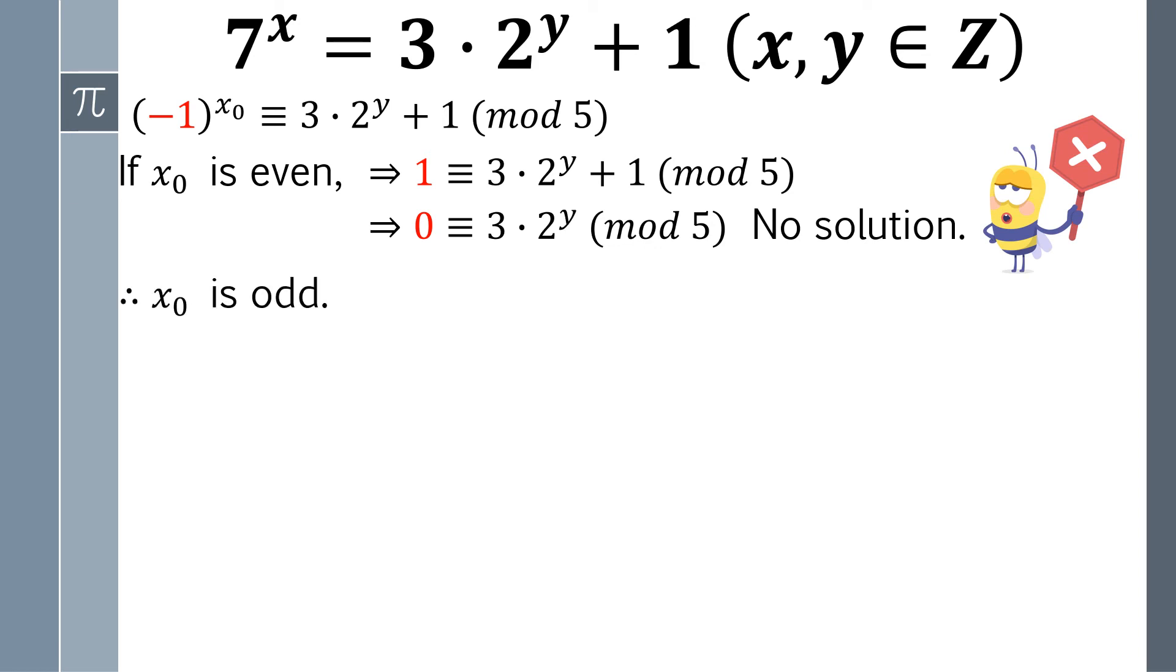That leads to the conclusion that x0 is an odd number. So we let x0 be 2 times x1 plus 1 and put it into the original equation. Now, the original equation becomes 49 to the power of 2x1 plus 1 equals 3 times 2 to the y power plus 1.